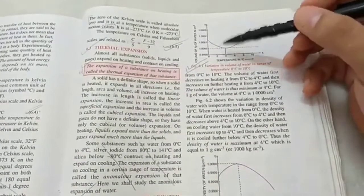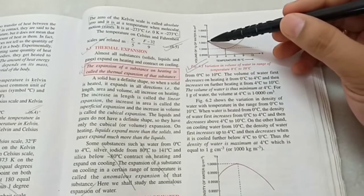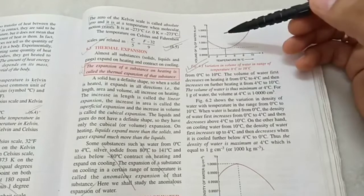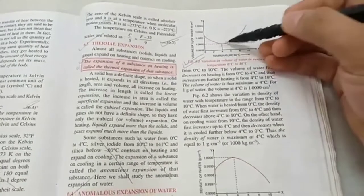The converse is also true. If ice melts, then when the ice melts, it starts contracting. When you heat ice, its volume decreases till 4 degree Celsius.